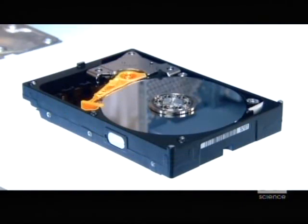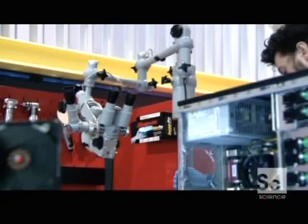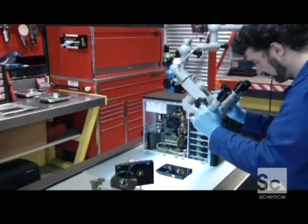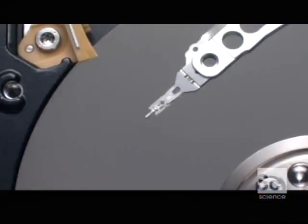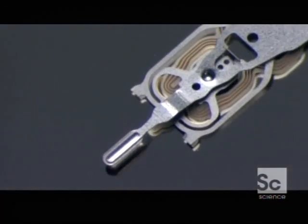But the heads never actually touch the discs. The space between the head and the surface of the disc is 5,000 times thinner than a human hair. The heads float on a cushion of air created by the spinning discs. An absolutely essential cushion that prevents the head from crashing on the disc.